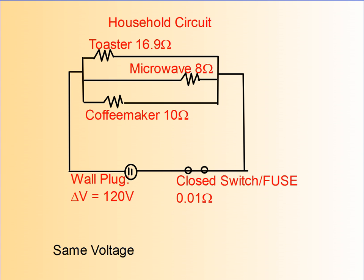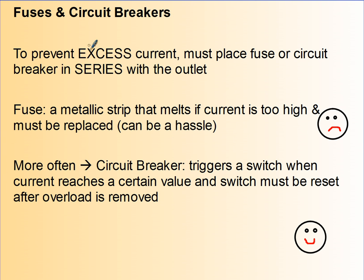So let's talk about the fuse. Fuses are used, fuses and circuit breakers are used to prevent extra current. So you have to put a fuse or a circuit breaker in a circuit in series with the outlet. Now a fuse is a metallic strip that melts if the current's too high, and this needs to be replaced. This is a hassle, this is a royal pain. When I was a child, this is how our house was. And if you ran out of fuses, then your light's blew, then you're kind of stuck in the dark.